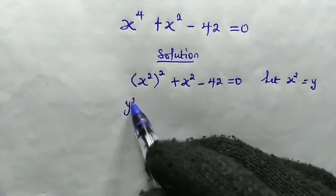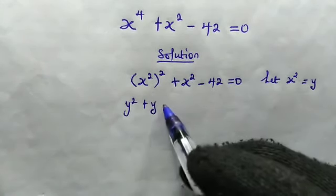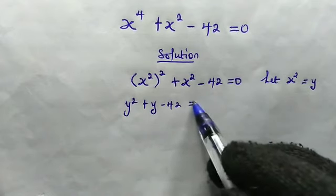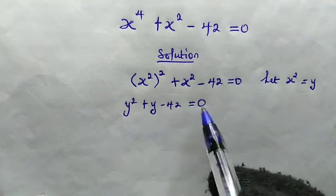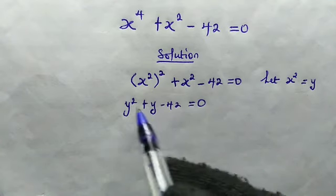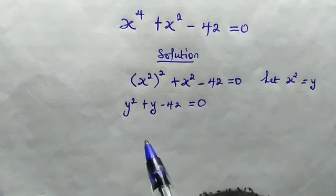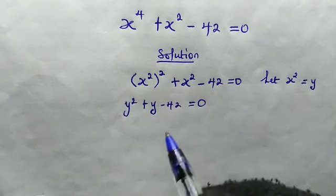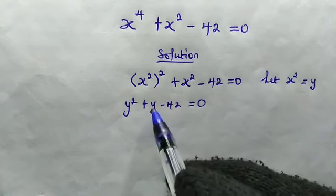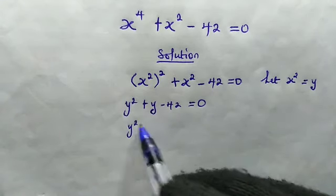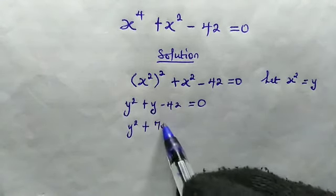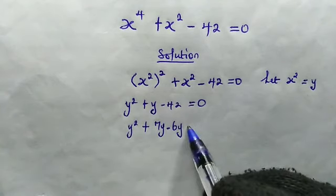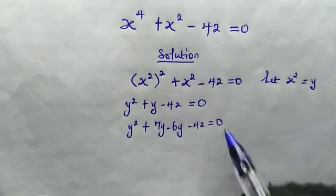So from here we have y squared plus y minus 42, this is equal to 0. From here, this left hand side of this equation can be factorized. And how do we factorize that? First of all, this y, we can write y as y squared plus 7y minus 6y. Then minus 42, this is equal to 0.